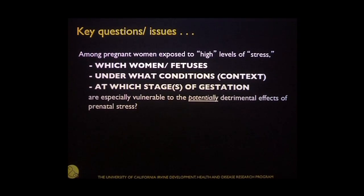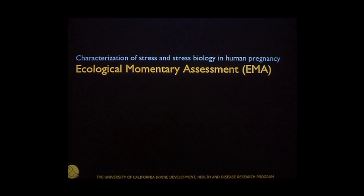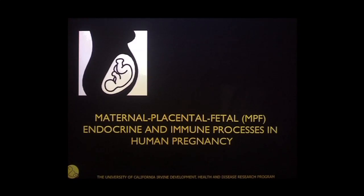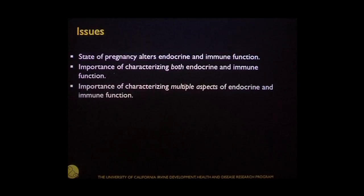That's what we try to get a handle on in prospective longitudinal human studies. We've been asking which women, under what conditions, at what stage of gestation might be vulnerable to the potentially detrimental effects of stress. We use approaches called ecological momentary assessment in our current studies. I'd also like to make a couple of general points about endocrine-immune interactions in pregnancy. The state of pregnancy changes both inflammatory and immune processes as well as endocrine processes, and it's important to characterize both and look at multiple aspects of each.